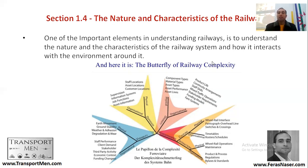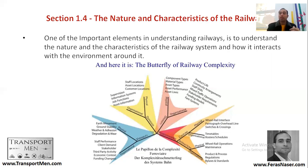We can think of four aspects of railway complexity. The first is variability — there is variability at both the organizational and physical levels. For example, staff performance and client demand are variable at the organizational level, while physical earth movement and ground stability vary from one location to another at the physical level.